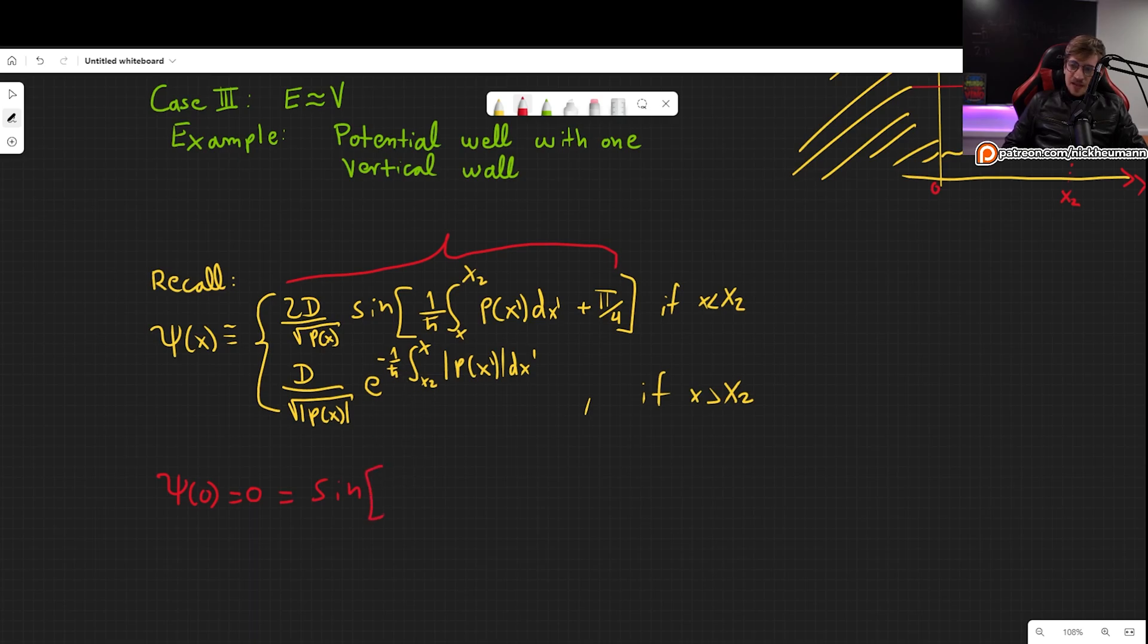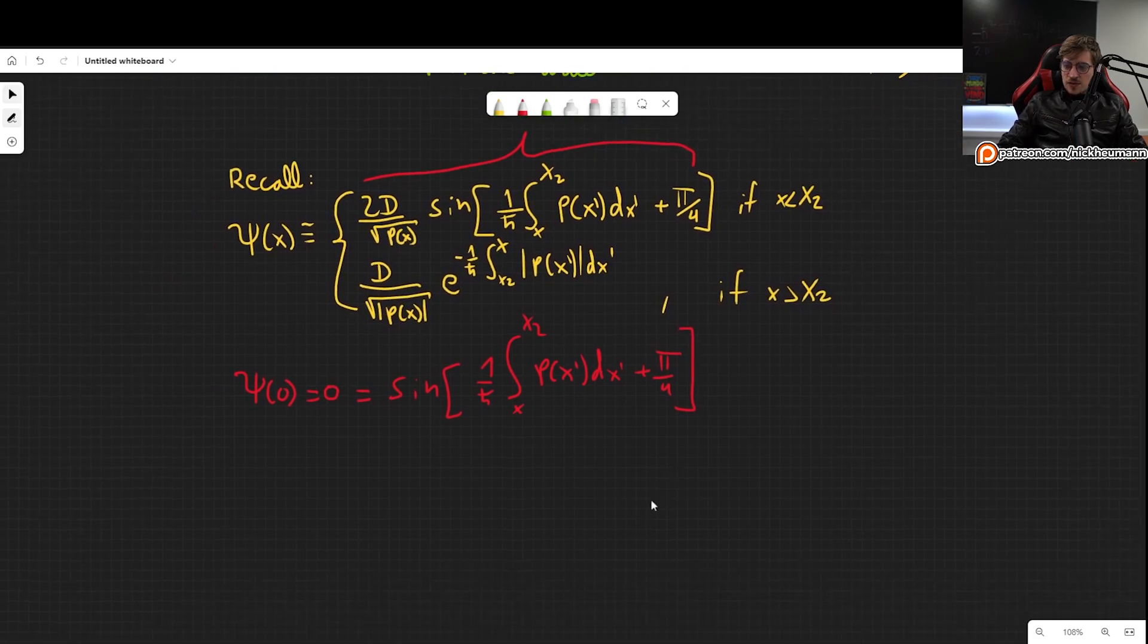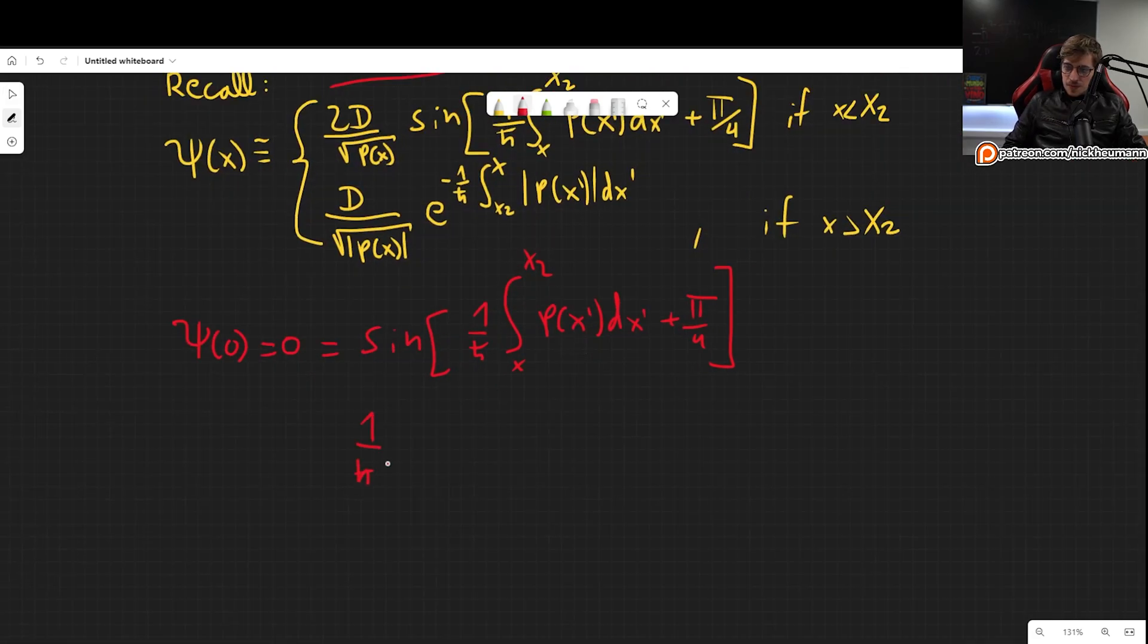How will this be 0? It can only be 0 if the sine here is 0. So 1 over h bar integral from x to x2 of p of x prime dx prime plus pi over 4, this needs to be 0. But for that to be 0, we need the sine to be 0. Its argument needs to be a multiple of pi, an integer multiple of pi. So this will be some n pi with n equal 1, 2, 3, 4, etc.